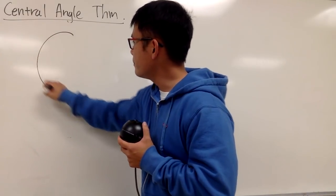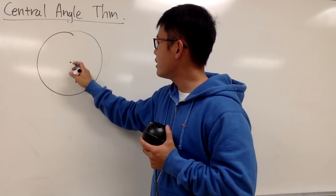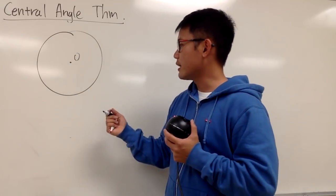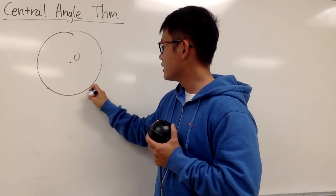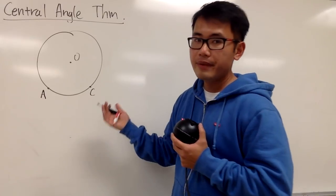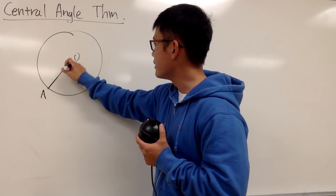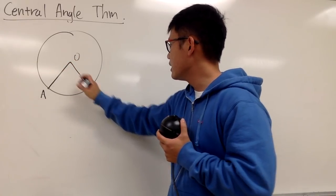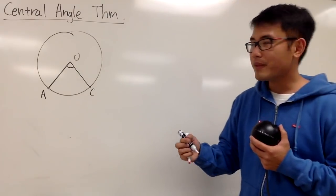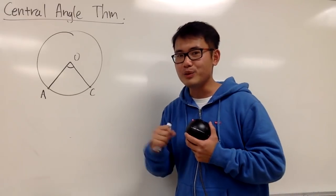First of all, we'll start off with a circle, and I will put down the center of the circle right here and call this O. Then we'll pick two points on the circle — I'll call this point A and point C. The central angle is formed by connecting A to the center and then the center to C. This right here is the central angle — the smaller one. It has to be less than 180 degrees by definition.